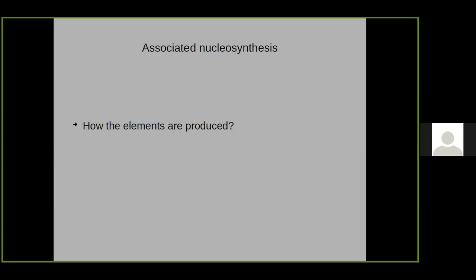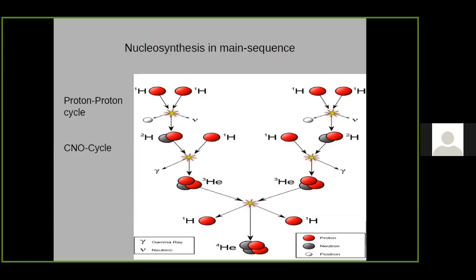Now let us see how elements are produced during this process. When a star's mass is around 1.5 times the Sun's mass, hydrogen burning occurs only by the proton-proton cycle — two hydrogen atoms combine through some process, helium-3 is formed, and finally helium-4 is produced. At this stage, some helium, deuterium, and tritium are produced in smaller quantities as contributions when stars are in the main sequence.